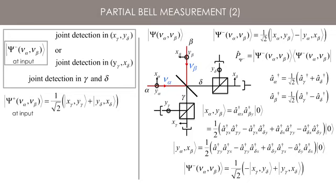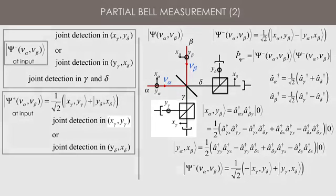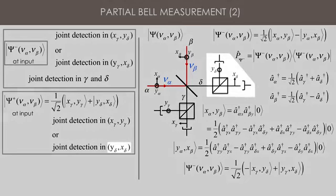for the psi-plus state, you can make a similar reasoning to show that you have either a joint detection of both polarizations of channel gamma or a joint detection of both polarizations of channel delta.